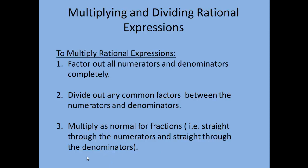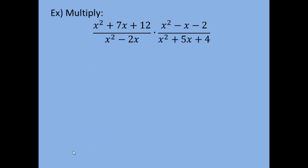Let's take a look at an example. For our first example, multiply: we have x squared plus 7x plus 12 over x squared minus 2x, and we're going to multiply that by x squared minus x minus 2 divided by x squared plus 5x plus 4. Our first step is to factor out everything as much as possible — so I'm going to factor all numerators and all denominators.